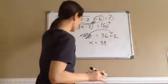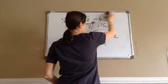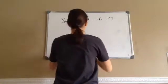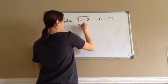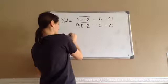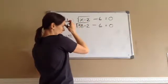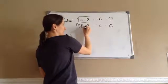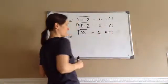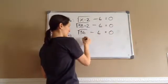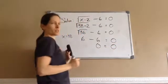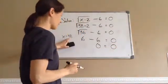Let's go back to the original problem to check. If x is 38, put 38 in: square root of (38 − 2) minus 6 equals 0. 38 minus 2 is 36. Square root of 36 is 6. 6 minus 6 equals 0. 0 equals 0 — that means we are correct, and 38 is our answer.